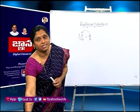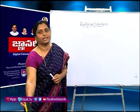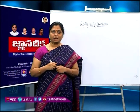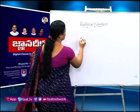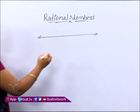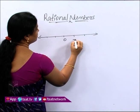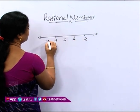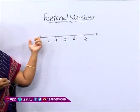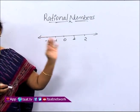Now we learn the representation of rational numbers on the number line. How to represent a rational number on the number line? What is a number line? A number line is a straight line which can be extended in both directions, having numbers on the straight line with equal distance. This is the number line.